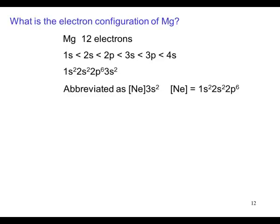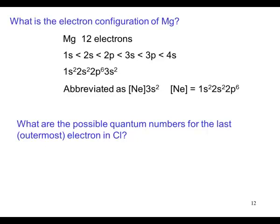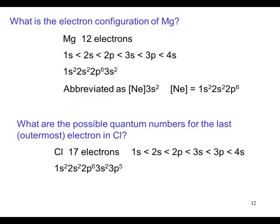What are the possible quantum numbers for the last, that is the outermost electron, in chlorine? Chlorine has 17 electrons. 1s2, 2s2, 2p6, 3s2. The remaining five electrons go in the 3p.